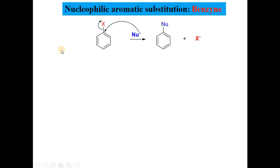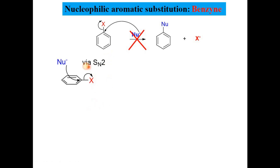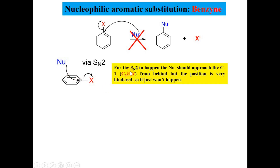The first mechanism is nucleophilic aromatic substitution involving benzyne. Here, X is a leaving group that can be replaced with another nucleophile NU. The NU will attack on carbon number 1 and replace X, but this direct substitution is not possible via SN2 mechanism, since the nucleophile would need to approach carbon 1 from behind. However, that position is very hindered, so SN2 cannot happen. Therefore, we carry out this reaction involving the benzyne intermediate.